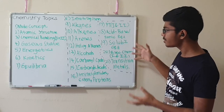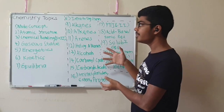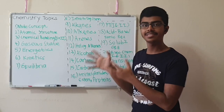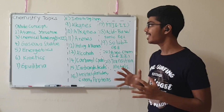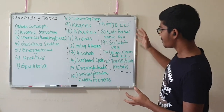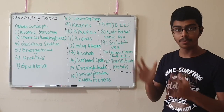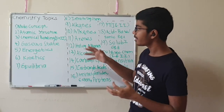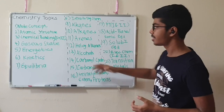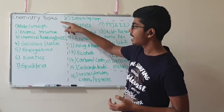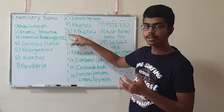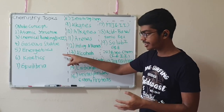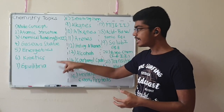In this new whiteboard, I'm running through the 21 different topics in the A-level chemistry syllabus — or just an estimated number. We have Mole Concept and Stoichiometry, Atomic Structure, Chemical Bonding 1 and 2 combined, Gaseous State, Energetics, Kinetics, and Equilibria.